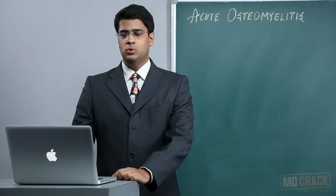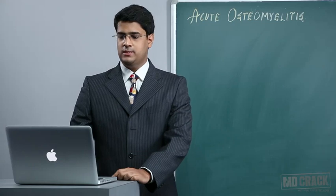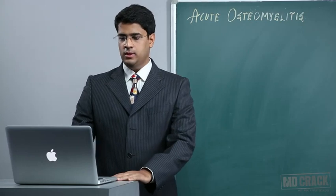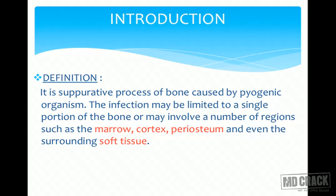Welcome students to a very important aspect of orthopedics: acute osteomyelitis. Acute hematogenous osteomyelitis — the definition is very important. It is a suppurative process of bone caused by pyogenic organisms. The infection may be limited to a single portion of a bone or may involve a number of regions such as the marrow cavity, the cortex, the periosteum, and even the surrounding soft tissue.